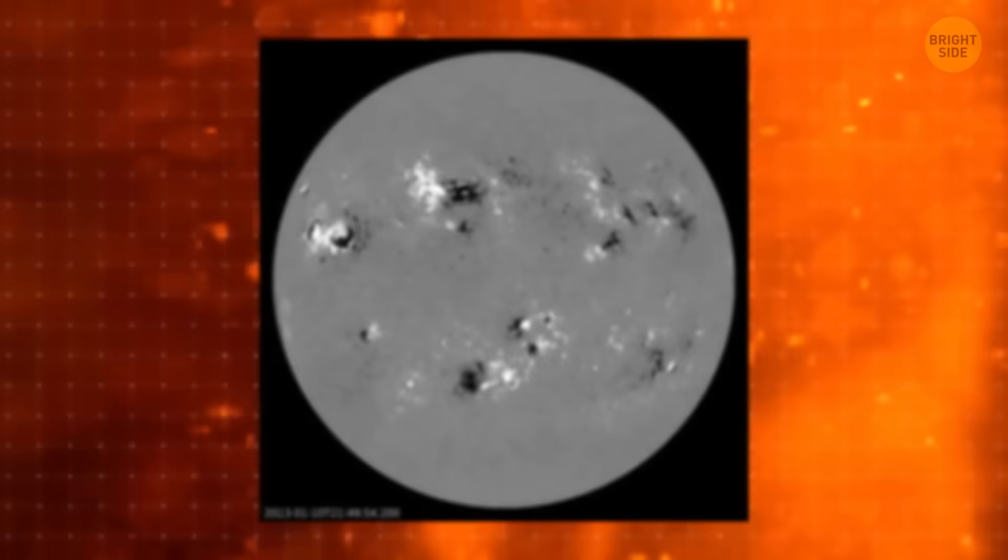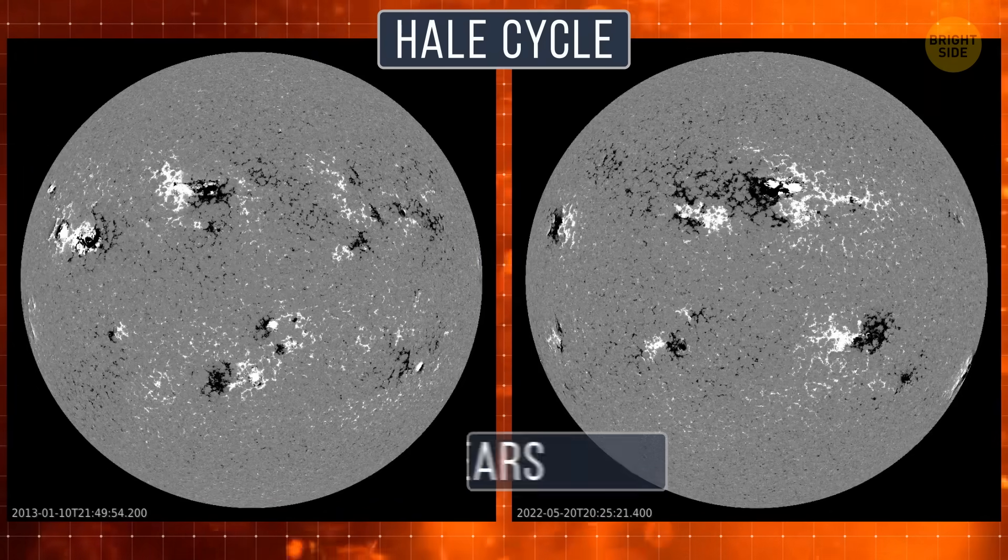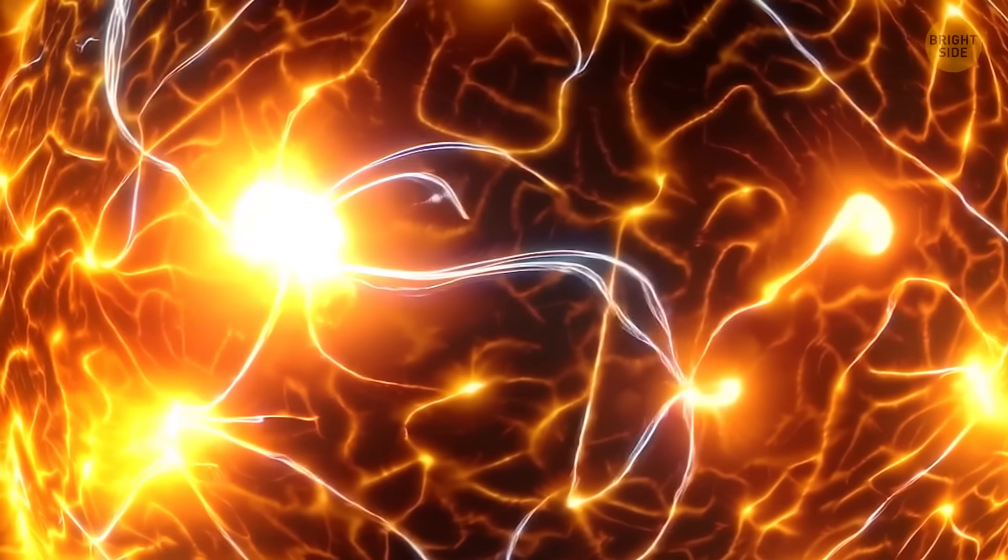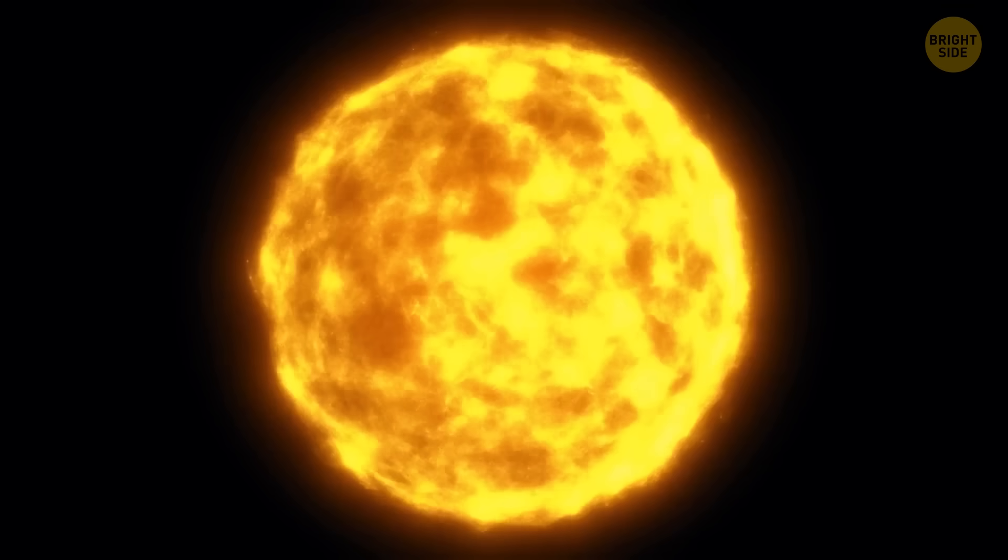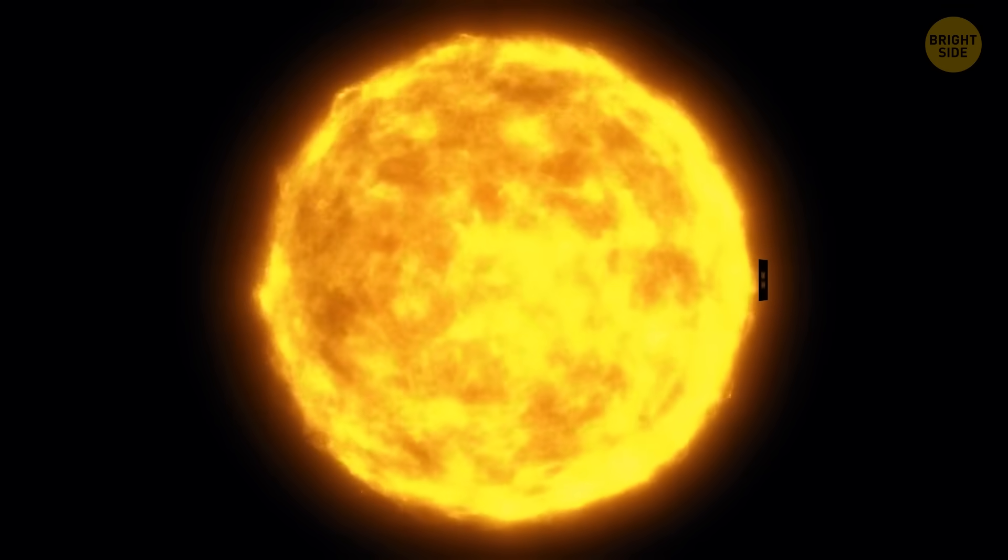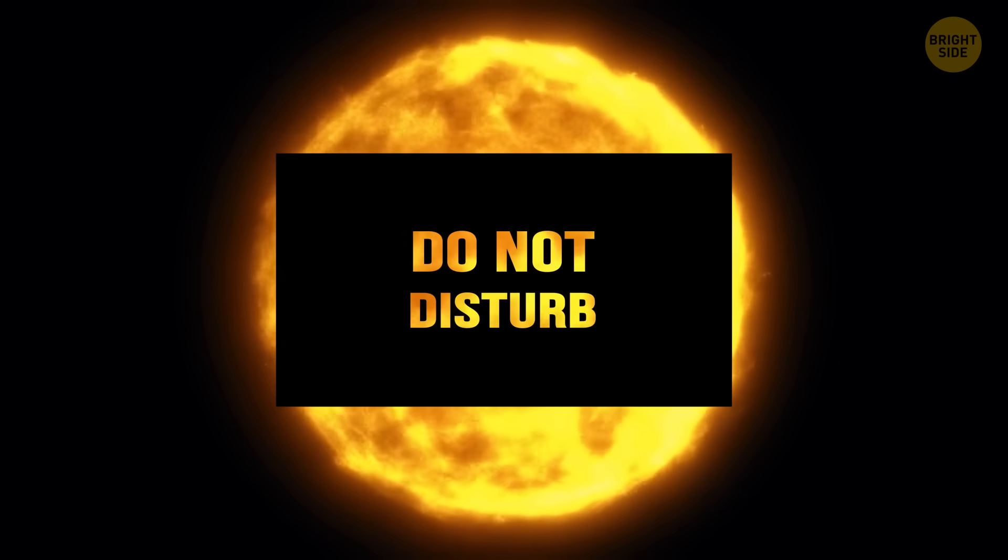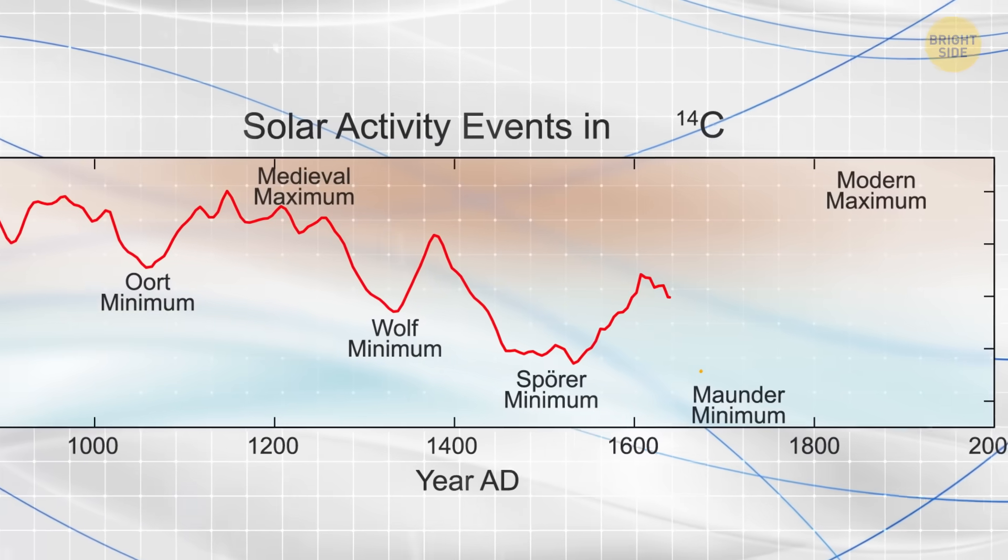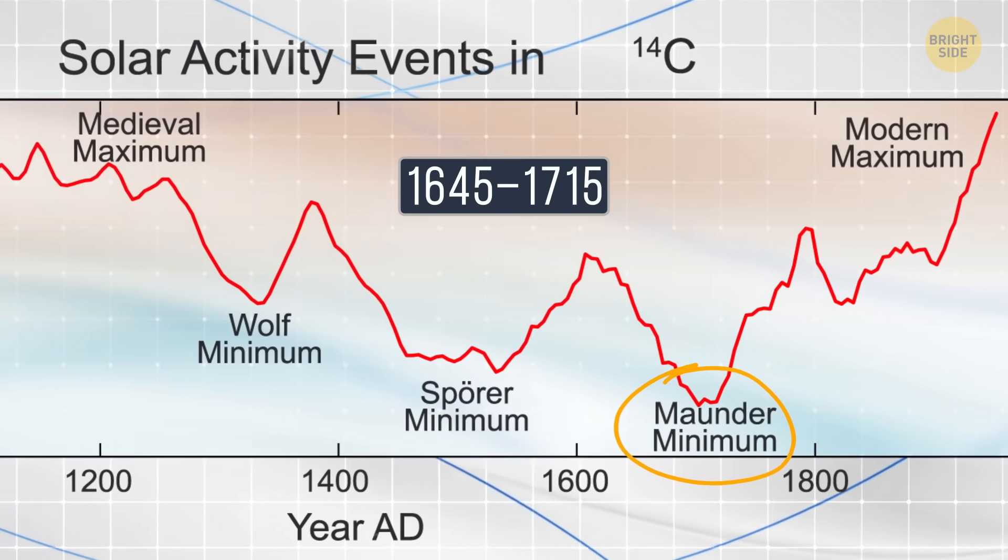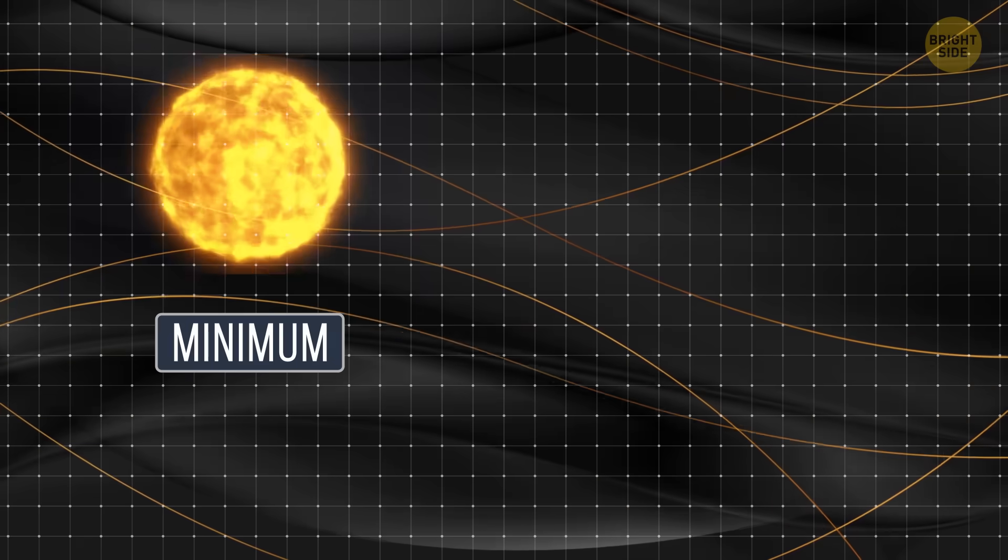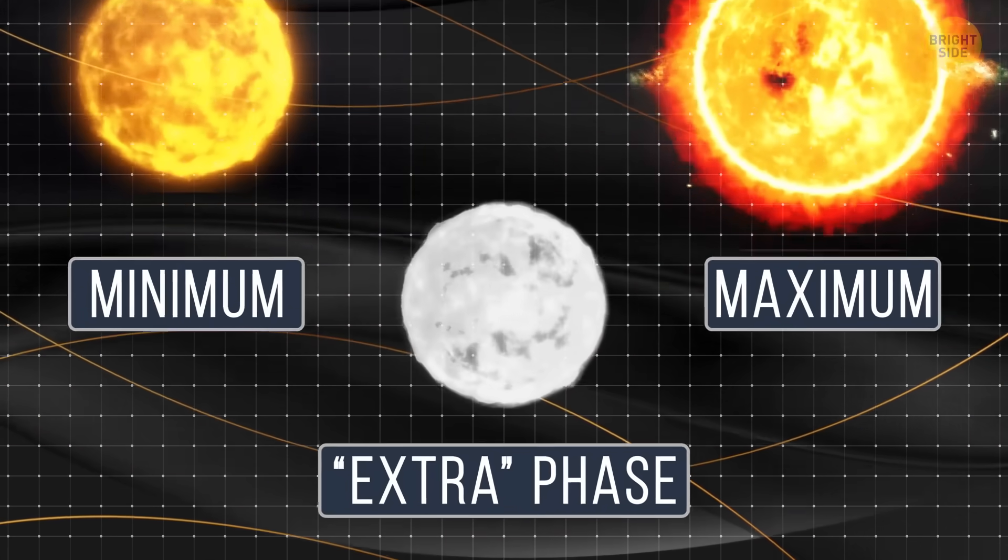But wait, plot twist, there are other cycles too. Like the Hale cycle, which occurs around every 22 years. This cycle controls how magnetic fields move across the Sun. Plus, way back in history, there were moments when the Sun basically went on do not disturb mode. During the Maunder minimum, our star was basically in sleep mode for 70 years. In other words, the Sun might be entering a new extra phase, and things could get dramatic.